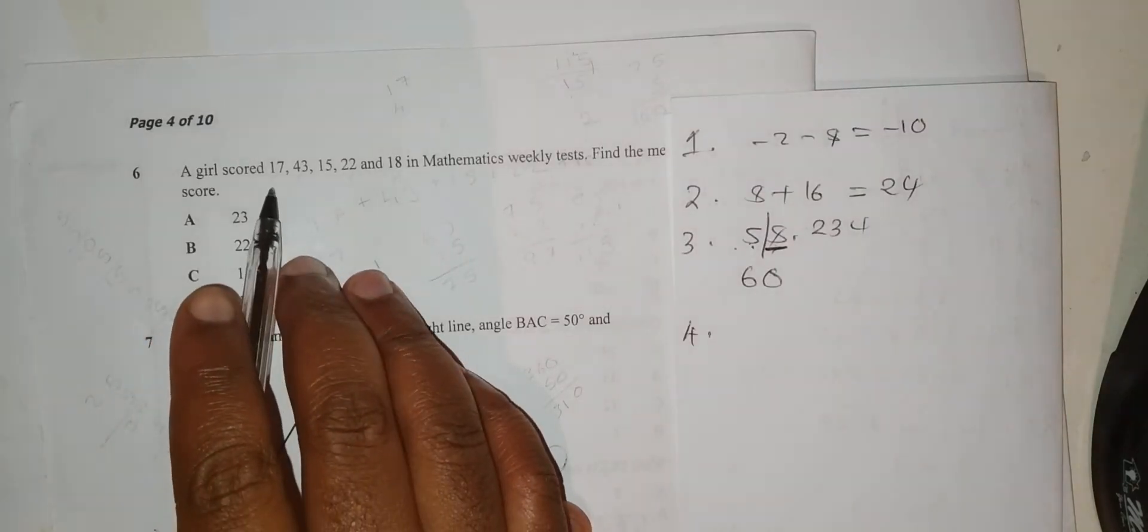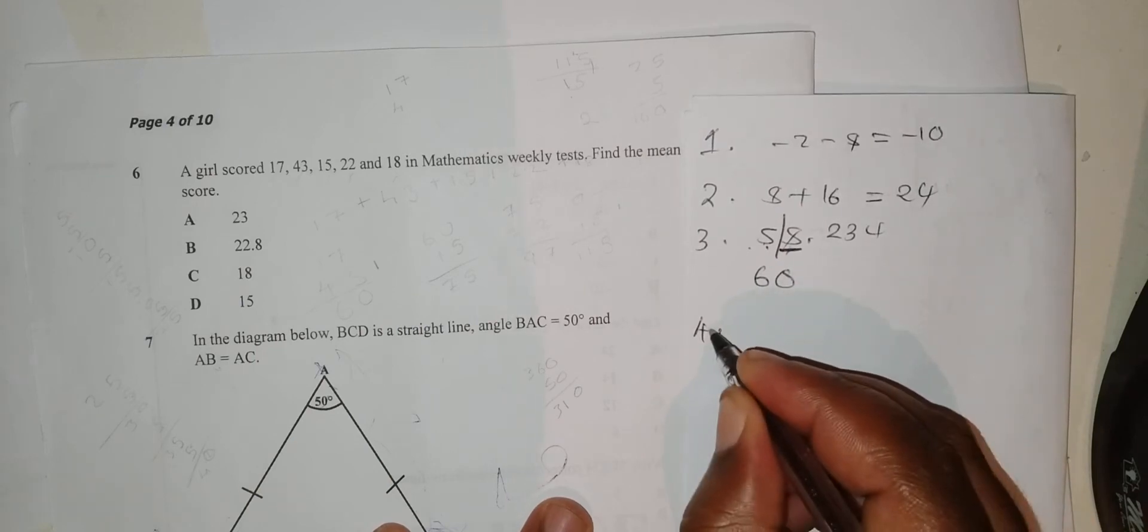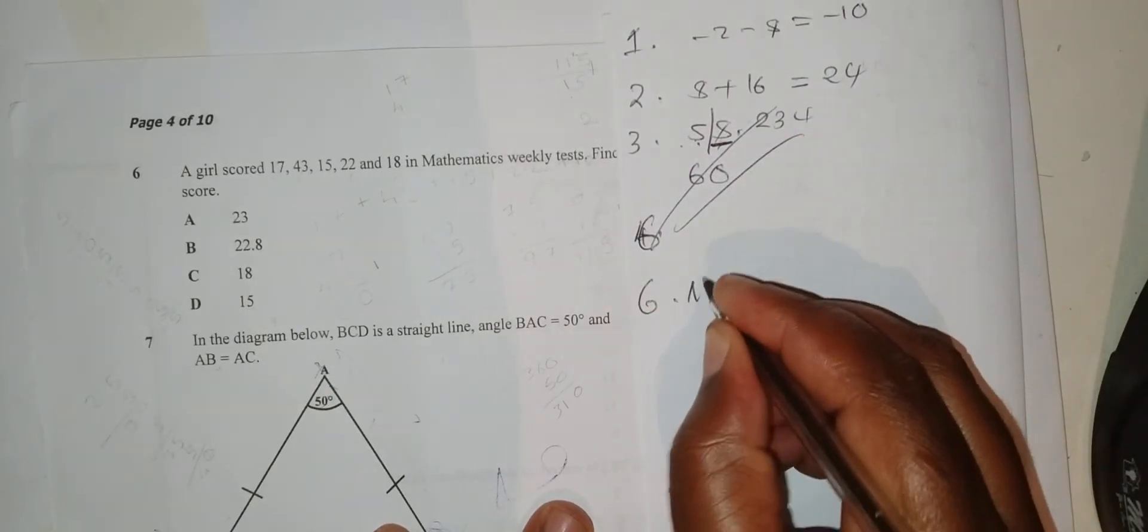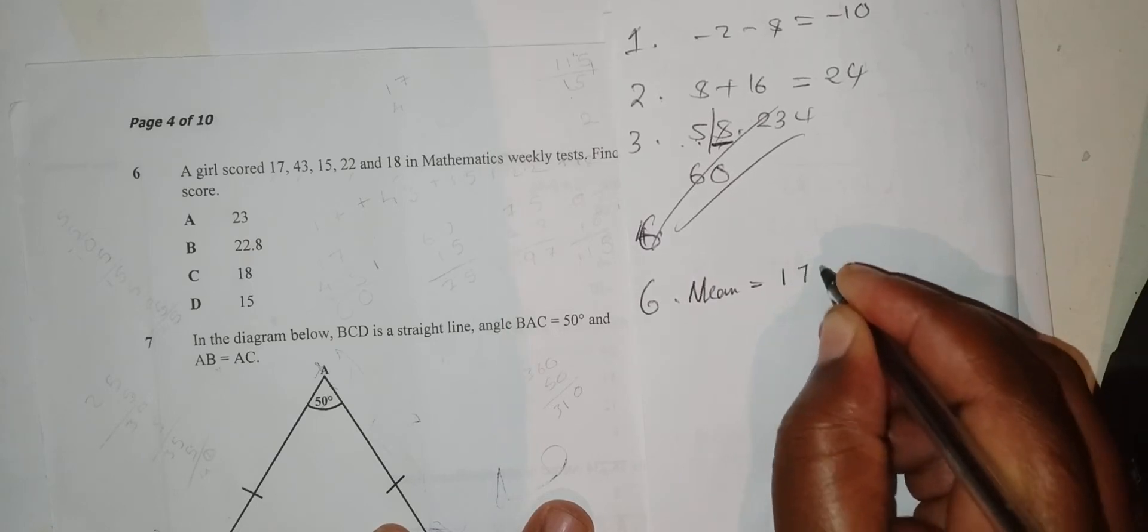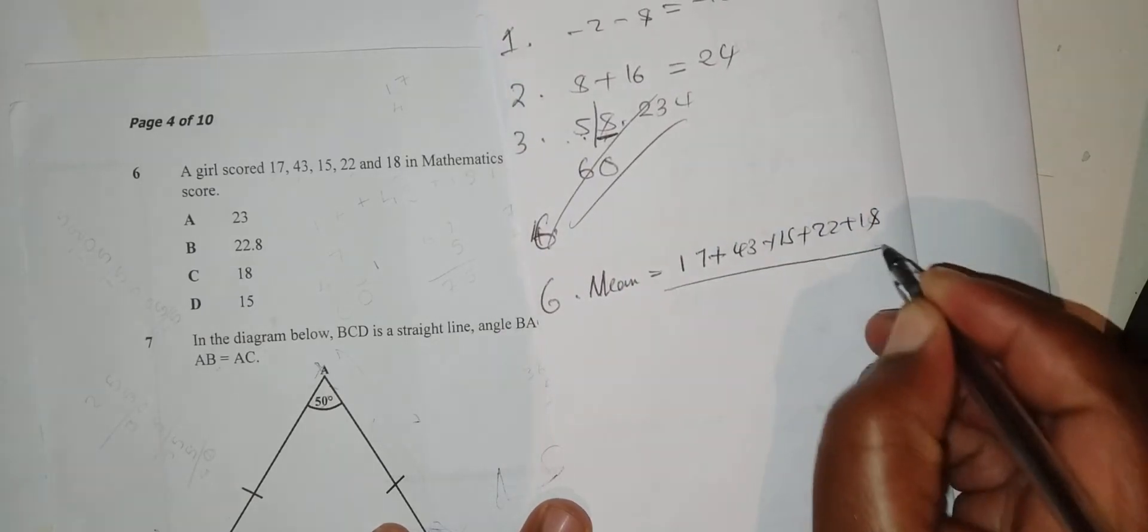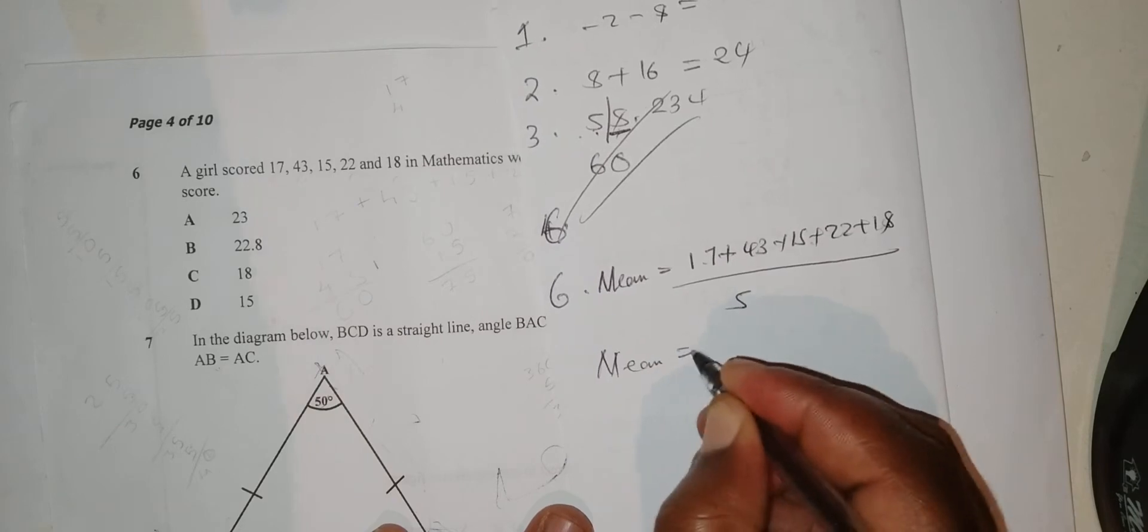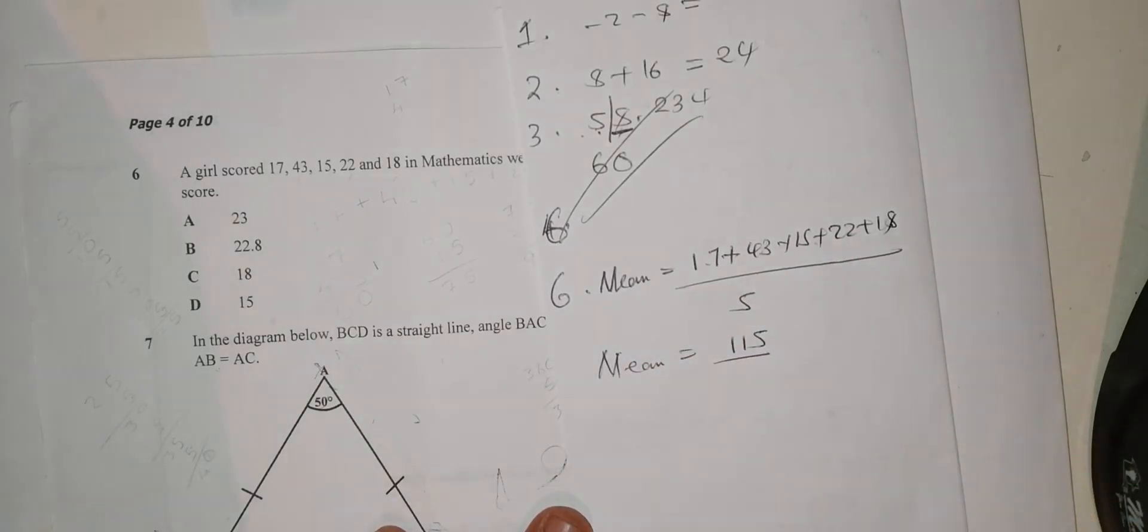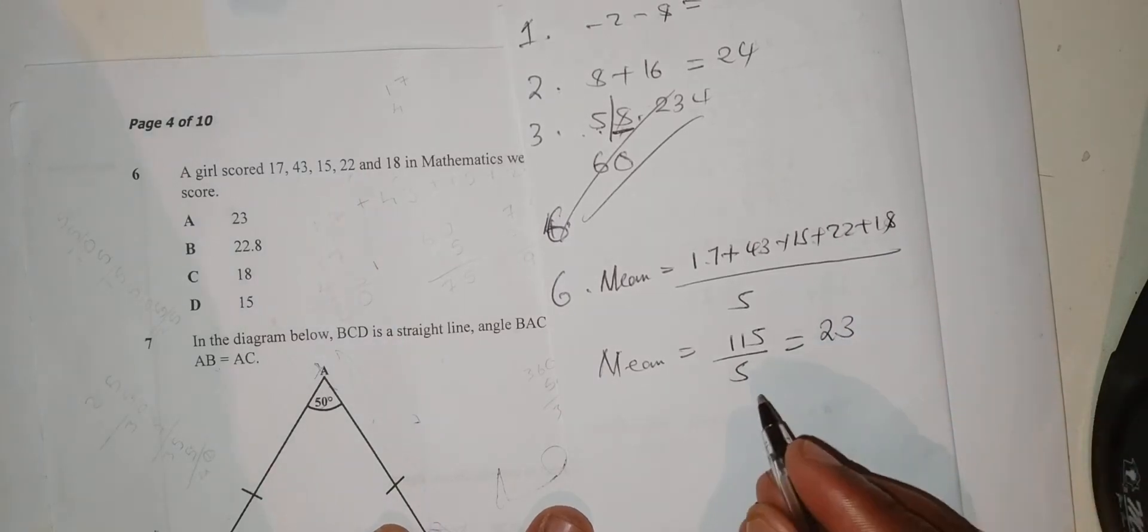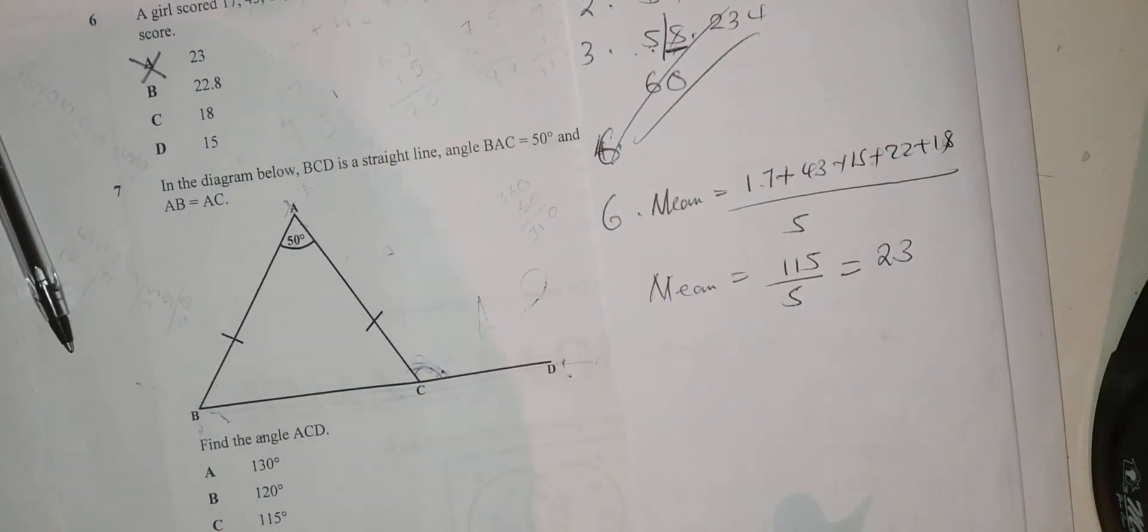Question 6: It equals Kudy's marks in mathematics weekly tests. Find the mean score. Mean equals the sum of them: 17 plus 43 plus 15 plus 22 plus 18 divided by how many scores we have, which is 5. So our mean equals 115 divided by 5, and we get 23. The answer here is A.